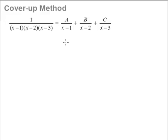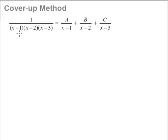We'll talk about the restrictions of this method later on, but for now let us use this example here to show you how the cover-up method works. This is a typical partial fraction question — we split it up into three simpler fractions. As we learned earlier on, to find the values of A, B, and C, we multiply throughout, flatten the equation, and substitute in values of x. To find A, we take a look at the denominator of A, which is x minus 1.